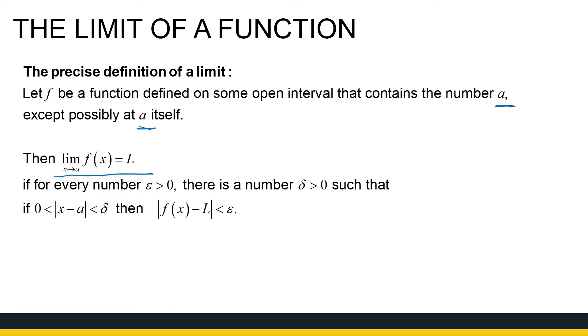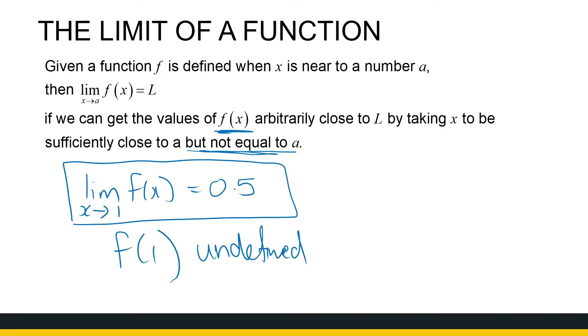Now, here's where the technical aspect comes in. If for every epsilon greater than 0, there is a number delta greater than 0, such that, if the distance between x and a is less than delta, then the distance between f of x and l is less than epsilon. So, what we're saying with this formal definition is what we said here. The values of f of x can get arbitrary close to l by taking x sufficiently close to a.